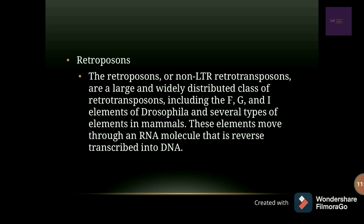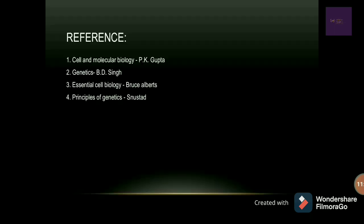Thank you — this concludes the discussion on transposable elements or jumping genes. The references used include Cell and Molecular Biology by P.K. Gupta and B.D. Singh, and Genetics by B.D. Singh, which are personally recommended as basic knowledge can be obtained from these books in very simple terms.